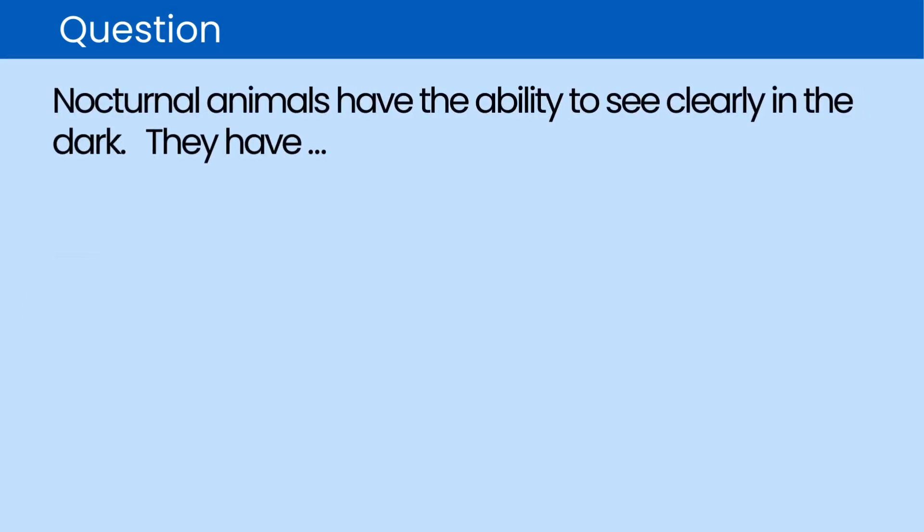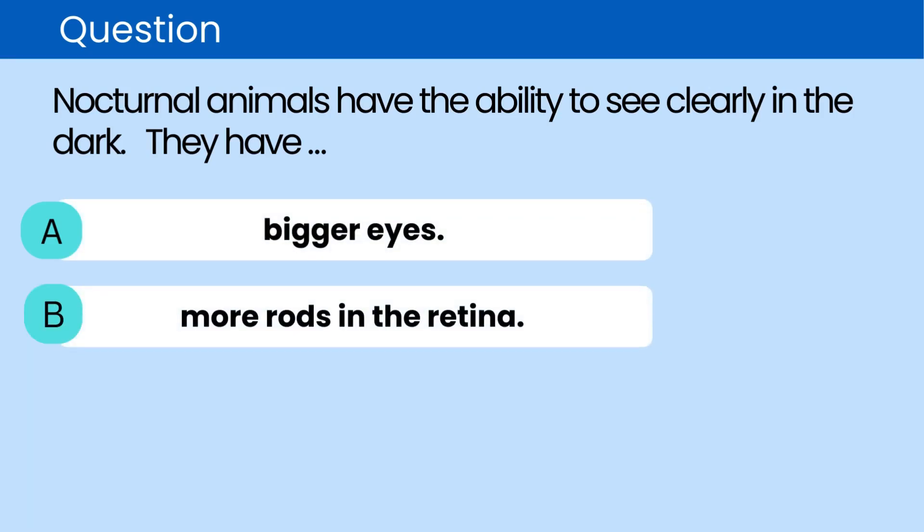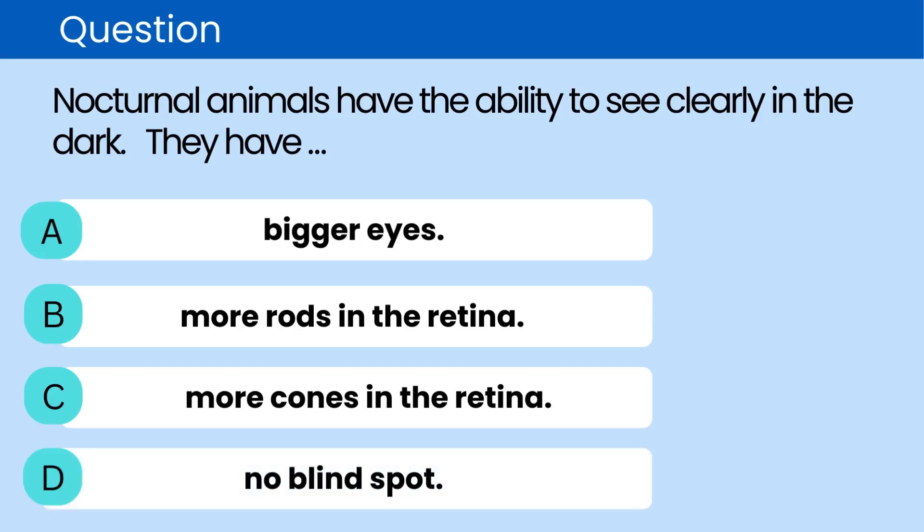Question. Nocturnal animals have the ability to see clearly in the dark. They have A. Bigger eyes. B. More rods in the retina. C. More cones in the retina. D. No blind spot.